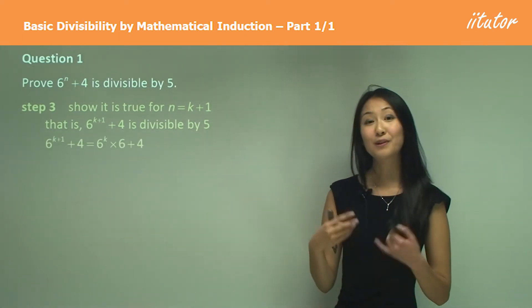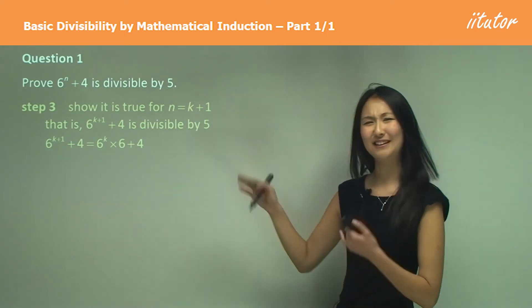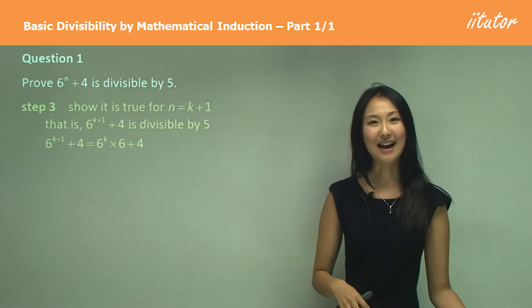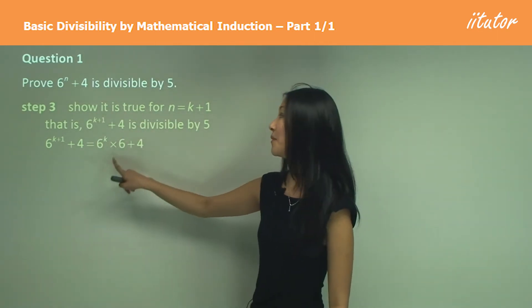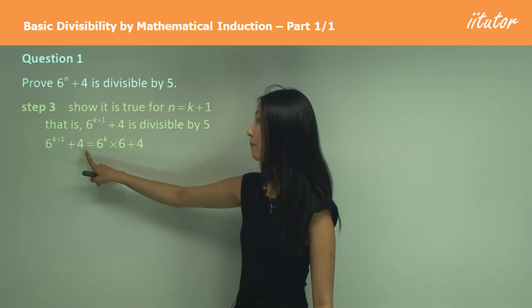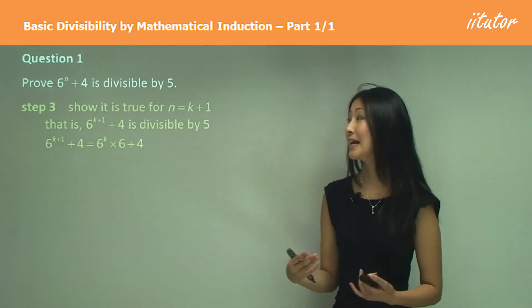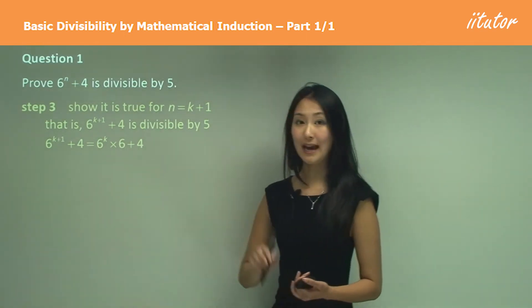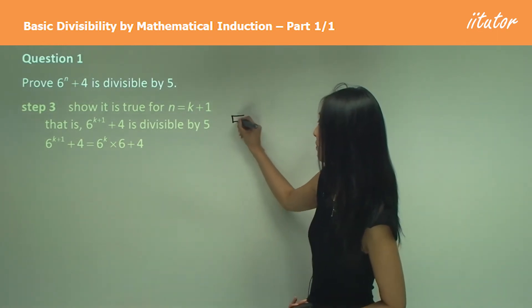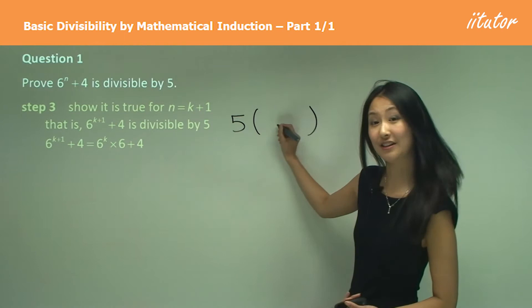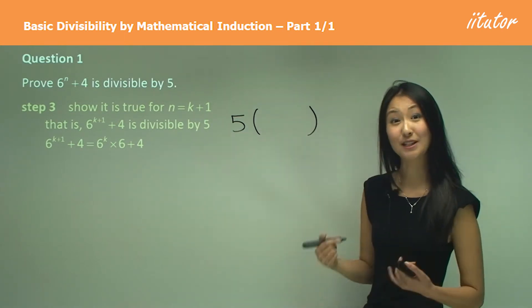So previously we started off with left-hand side. Well, there's not really a left-hand side or a right-hand side here. We just start off with what's been given. So we have 6 to the power of k plus 1 plus 4, and now what we need to do is to manipulate it so we can make it equal to 5 multiplied by an integer to show that it's divisible by 5.